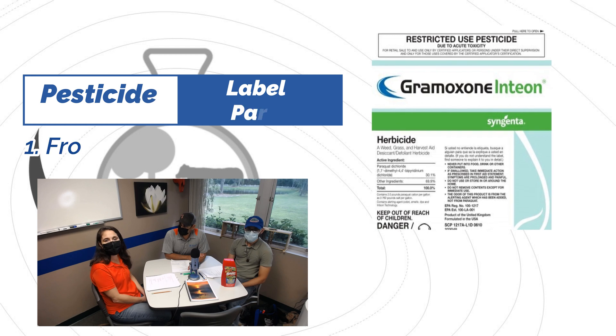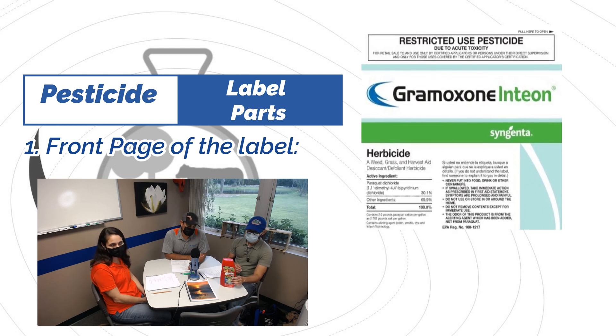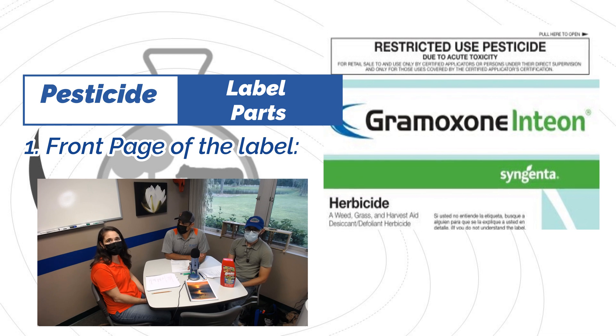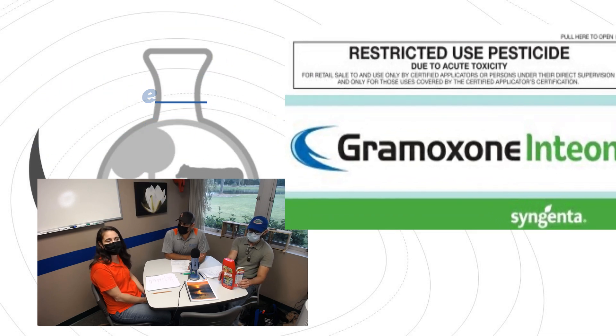The first part of the label is going to be the front page. It will always say 'restricted use pesticide' in very large letters if it is a restricted use pesticide, and it gives the reason why — for example, acute toxicity that would be harmful to humans or the environment. Next, you're going to see the brand name or trade name in large lettering — that is the name the specific manufacturer gives to their product. In this example that Luis is holding up, the name is '7,' which is the brand or trade name of this product.